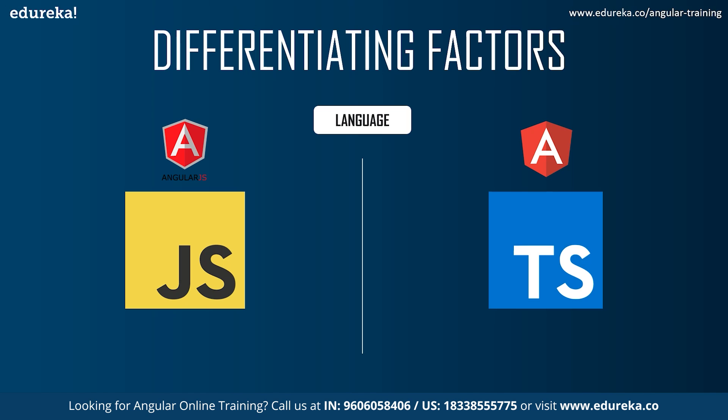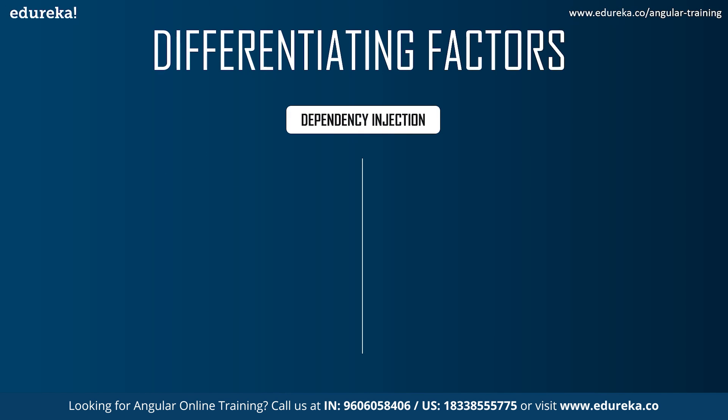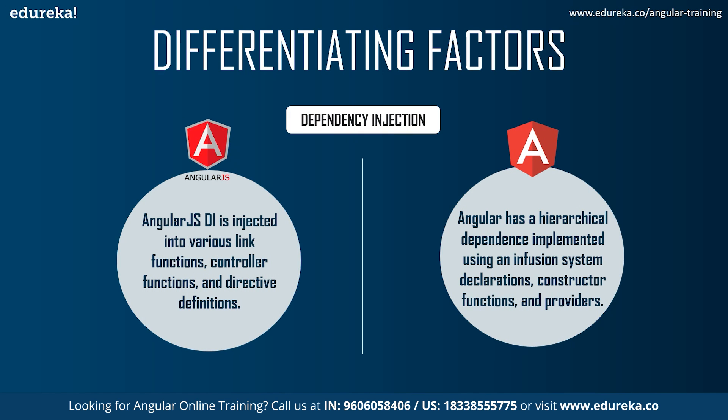Secondly, we have language differentiating the two. AngularJS uses JavaScript and Angular uses TypeScript. Next, we have dependency injection. In JavaScript-based AngularJS, dependency injection occurs via various link functions, controller functions, and directive definitions. Angular, on the other hand, uses declarations and constructor functions and provides a hierarchical dependency injection architecture.